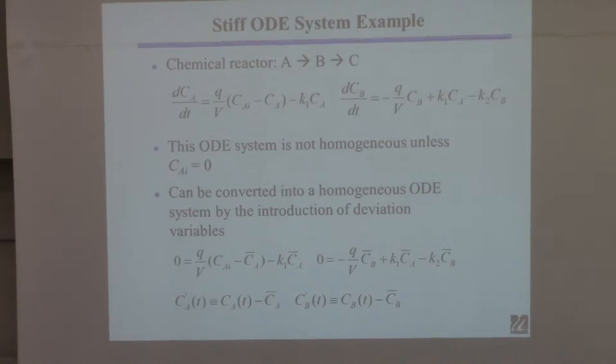But at least I'll get it started. Okay. So here is a simple reaction scheme. A goes to B goes to C. And if this were to occur in a certain type of chemical reactor, those would be the governing equations, component balances for the system.